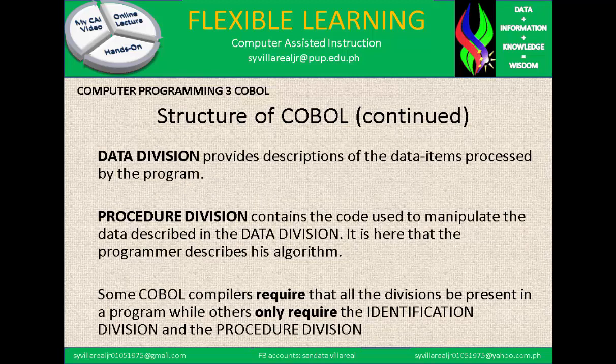The data division provides description of the data items processed by the program. All data that comes from the programmer is put into the data division. Many examples are variables, but in COBOL they are not called variables — they are called data items or data descriptions. The procedure division contains the code used to manipulate the data described in the data division. It is here where the programmer describes the algorithm — if statements, for statements, goto statements — all of those clauses are in the procedure division.